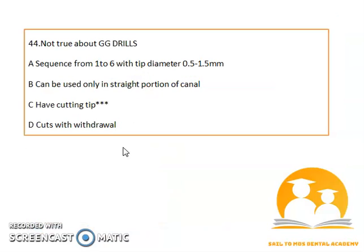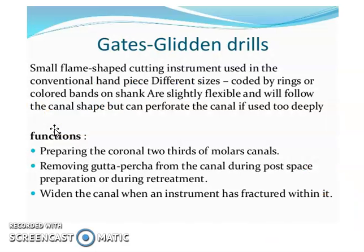Regarding Gates Glidden drills: they do not have cutting teeth; they have a sequence from 1 to 6 with a tip diameter of 0.5 to 1.5 mm; they can be used only in the straight portion of the canal; and they cut with withdrawal. Their shape is flame-shaped. They can be used for preparing the coronal two-thirds of molar canals, to remove gutta-percha during post space preparation or retreatment, and to widen the canal when an instrument has fractured within it.